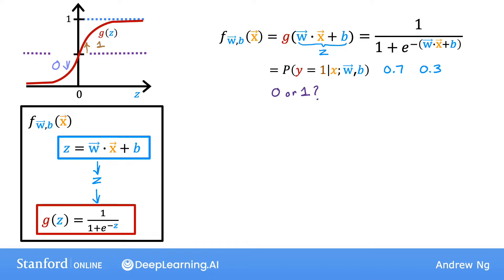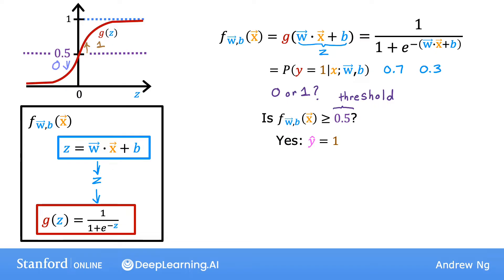A common choice would be to pick a threshold of 0.5, so that if f of x is greater than or equal to 0.5, then predict y is 1 — y-hat equals 1. Or if f of x is less than 0.5, then predict y is 0 — y-hat equals 0.